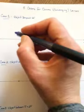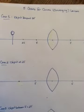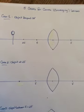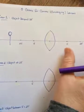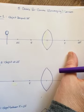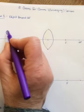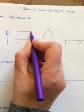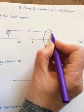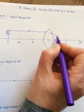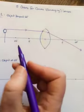Case one is the object beyond 2f, so we're going to put the object out here beyond 2f. We're going to find where the image is. From the last video there were three rays you can use. The first ray, drawn in a different color from the head, goes in parallel to the principal axis and gets refracted in such a way that it comes out through f on the other side of the lens.